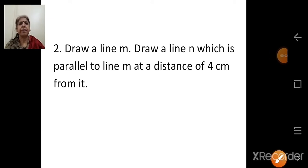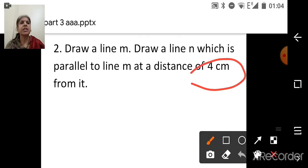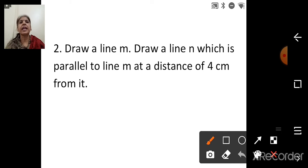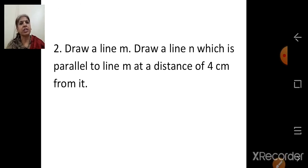Question 2: Draw a line M, then draw a line N parallel to line M at a distance of 4 cm from it. This construction is different from the previous one because a specific distance is given. We first draw line M, then draw line N parallel to it at 4 cm distance. Children, have your geometry box ready and do the construction along with me.